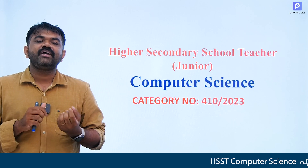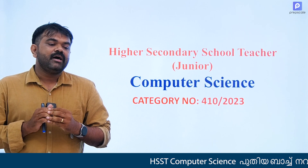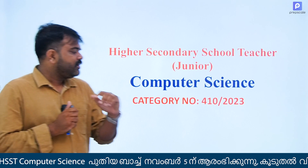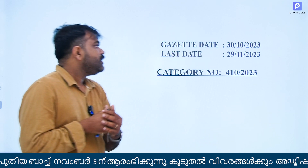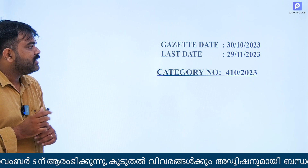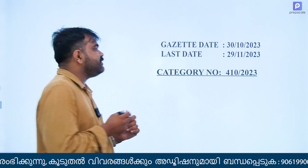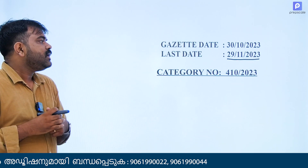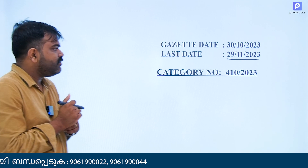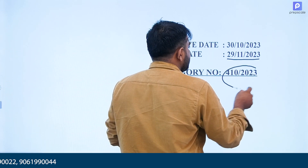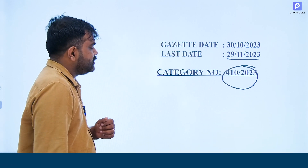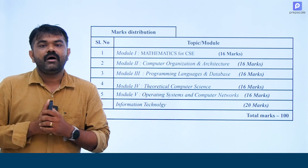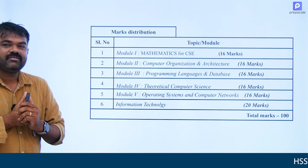What is the basic qualification? What is the notification that we discussed in the previous video? The last date is November 29th. The category number is 410-2023 and 510-2023. So, if you have a computer science background, we will have a golden chance.